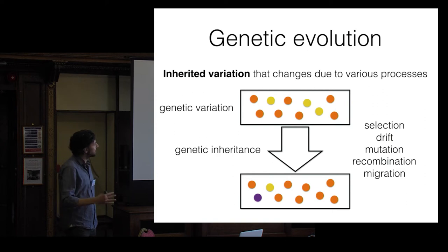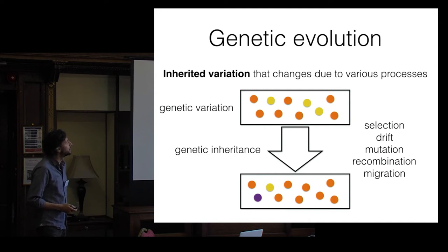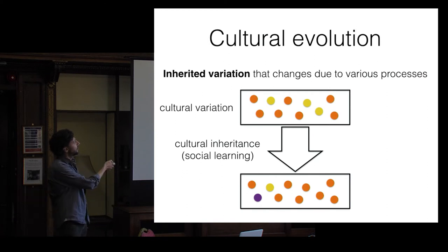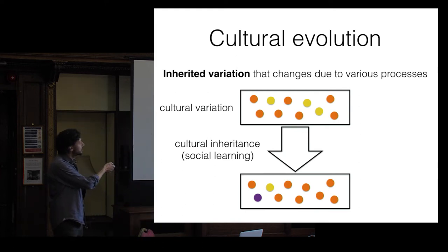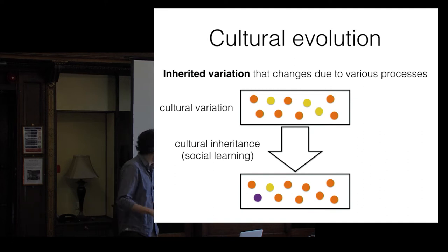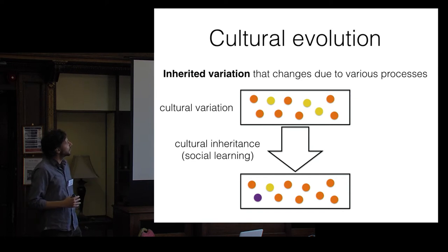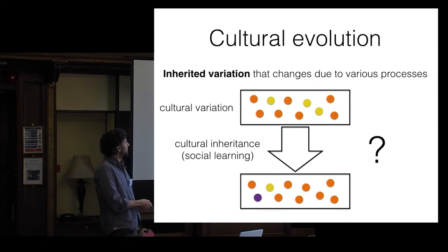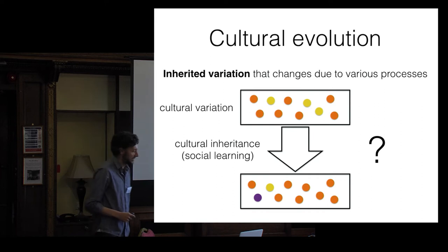This abstract picture of genetic evolution maps onto cultural evolution: we have cultural variation in ideas, attitudes, beliefs, and skills. We have cultural inheritance through not genetic but social learning — through imitation, spoken or written language, or various other social learning mechanisms. And the question occupying cultural evolution researchers since the seventies and eighties is: what are the processes that change cultural variation over time, from generation to generation?